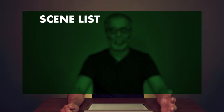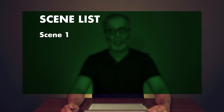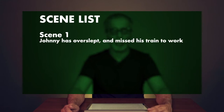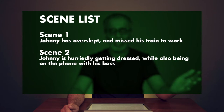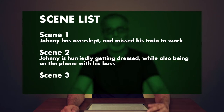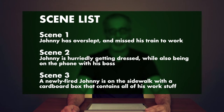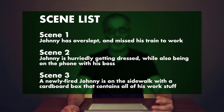I start by making a scene list. It doesn't have to be elaborate or highly detailed. I can use bullet points and a single line to describe what happens in each scene. For example: Scene 1, Johnny has overslept and missed his train to work. Scene 2, Johnny is hurriedly getting dressed while also being on the phone with his boss. Scene 3, a newly fired Johnny is on the sidewalk with a cardboard box that contains all of his work stuff.